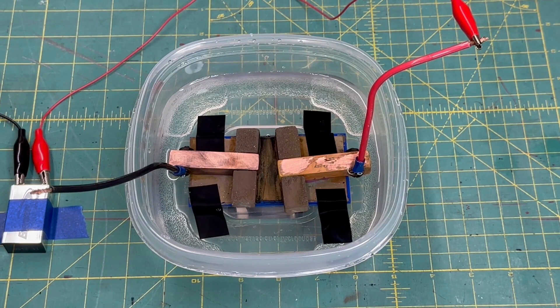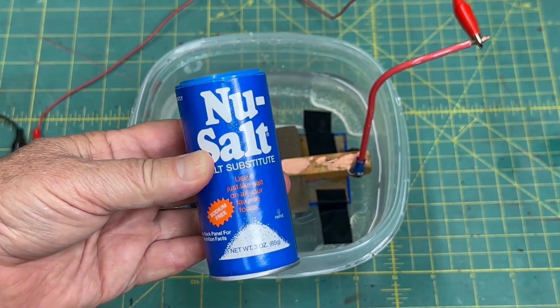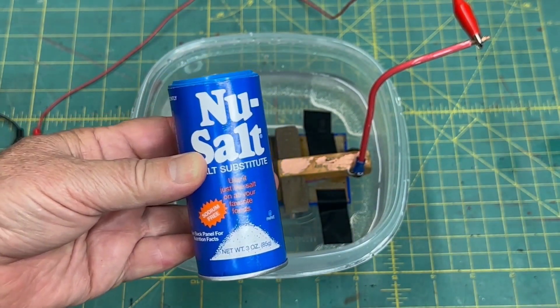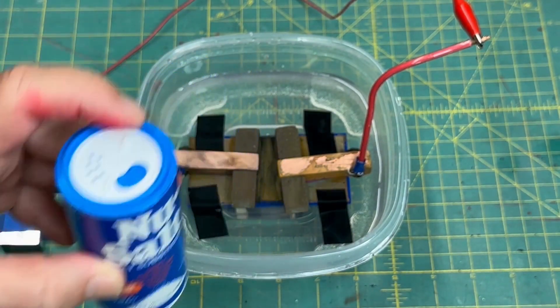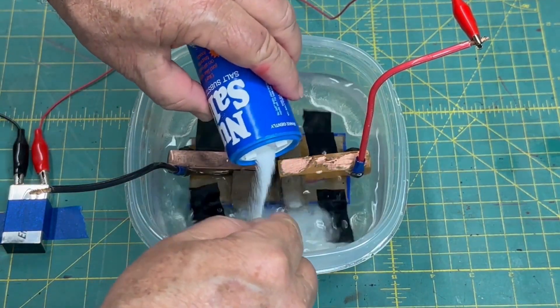So to get a little better ionization rate, we're going to use potassium chloride instead of sodium chloride or salt. A great source of that is a salt substitute, Nu Salt, which is 100% potassium chloride. So we'll just mix this in instead.